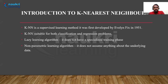So what is KNN? KNN is nothing but K Nearest Neighbor. KNN is a supervised learning method. It was first developed by Elvin Fix in 1951. KNN is suitable for both classification and regression problems and is also known as a lazy learning algorithm, because it has no specialized training phase — there is no training time required. It is also known as a non-parametric learning algorithm, meaning it does not assume anything about the underlying data.